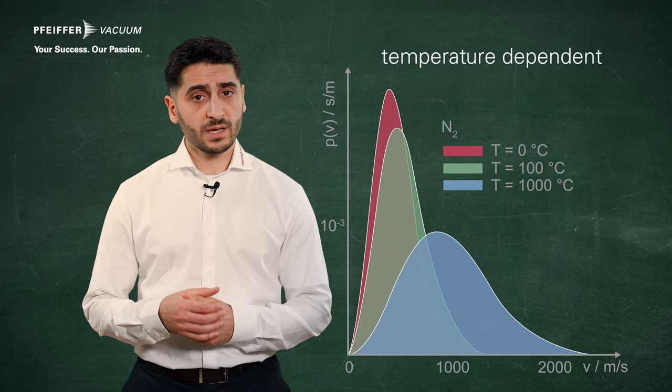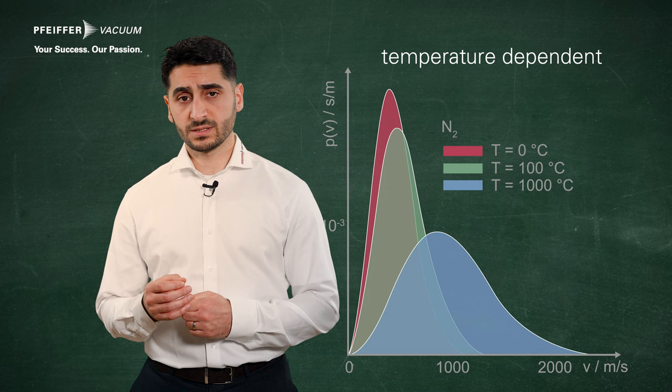If we look at the velocity distribution of nitrogen in the temperature dependent form of representation, we see that the particles have a higher average velocity at higher temperatures.